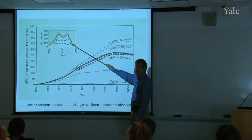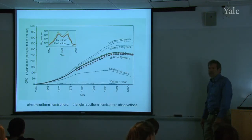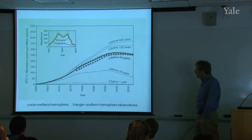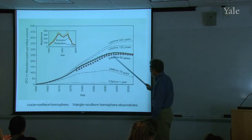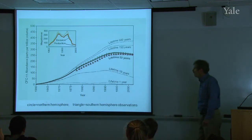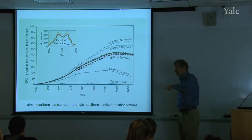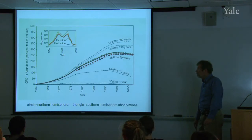Thank goodness we've stopped putting CFCs into the atmosphere. But it's not going to decrease to zero just because we've stopped — it's stored in the atmosphere for a while, it has a long lifetime. The circles are data from the northern hemisphere and the triangles from the southern hemisphere, but they're pretty much the same — this stuff gets mixed back and forth between the two hemispheres.